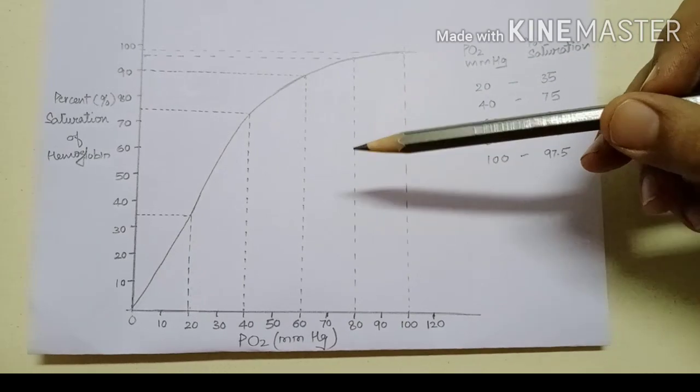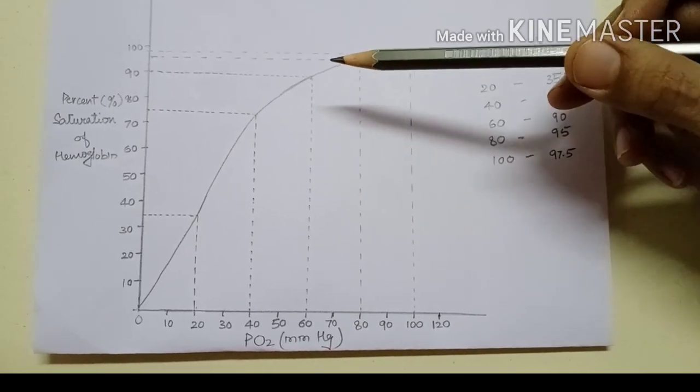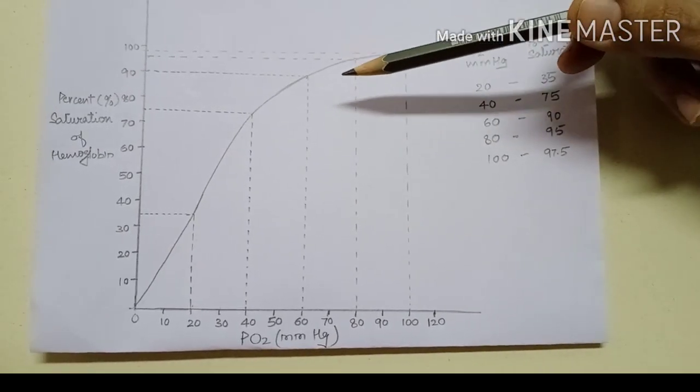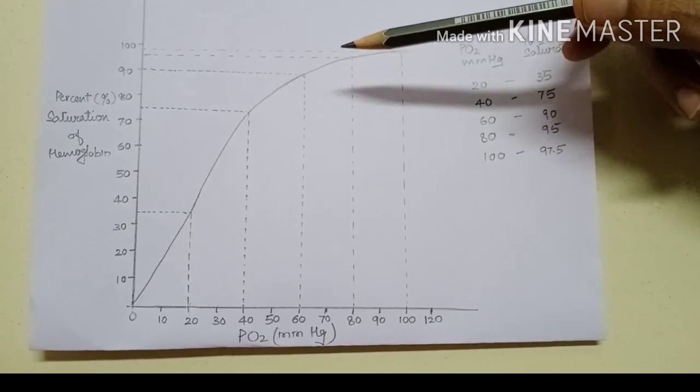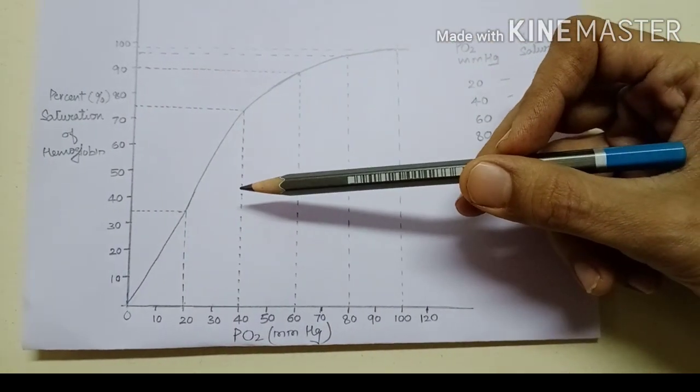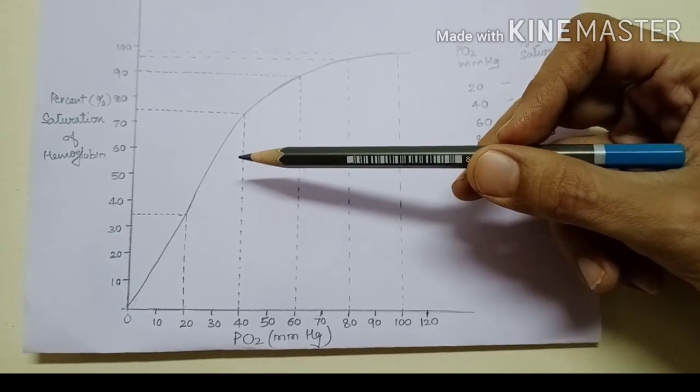This curve has two zones. One is the loading zone, also known as the plateau or flat part. And second is the unloading zone, which is also known as the steep part.